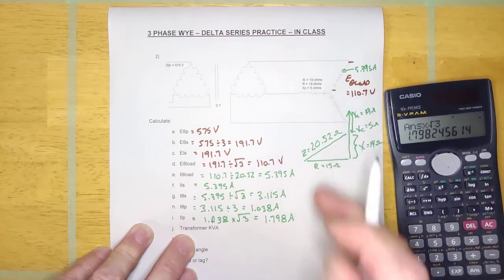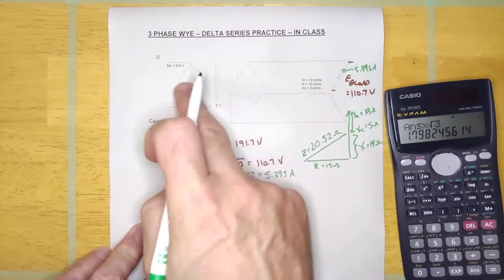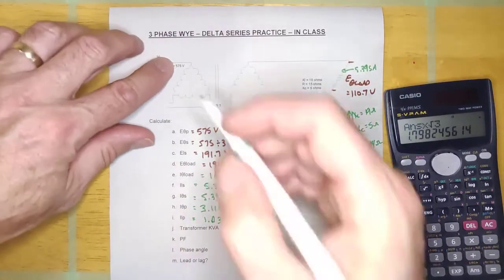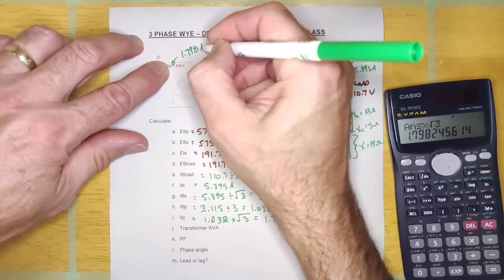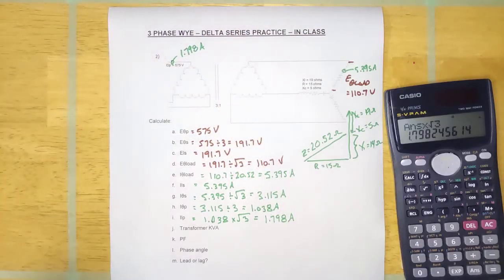Okay guys. So, I took that current back through the system until I got to my primary line current, which is right there. 1.798 amps. Excuse me for a second. We're at that point right there, guys.